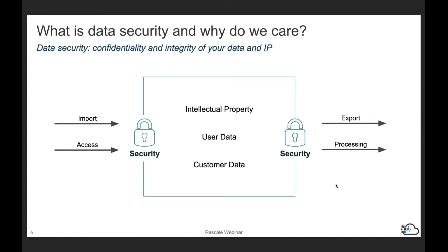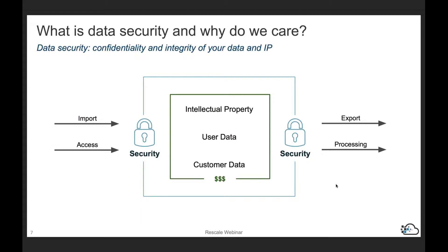We treat data security as the confidentiality and integrity of your data and IP. Specifically, the three items you most likely want to protect are intellectual property, user data of your own users, and customer data if you're interacting with customer data. Around those data, there are different actions that can be performed. Incoming actions include importing and accessing data, and outgoing actions include exporting and processing data. All of this data can be quantified to a monetary value, so you have the proper incentive to protect it.